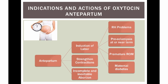Oxytocin is also used to stimulate contractions in an incomplete or inevitable abortion to empty the uterus. It can also be used to strengthen or augment contractions in the first and second stage of labor if labor is not progressing well — for example, if contractions are not coming frequently enough or forcefully enough to dilate the cervix and move the baby down in the birth canal.